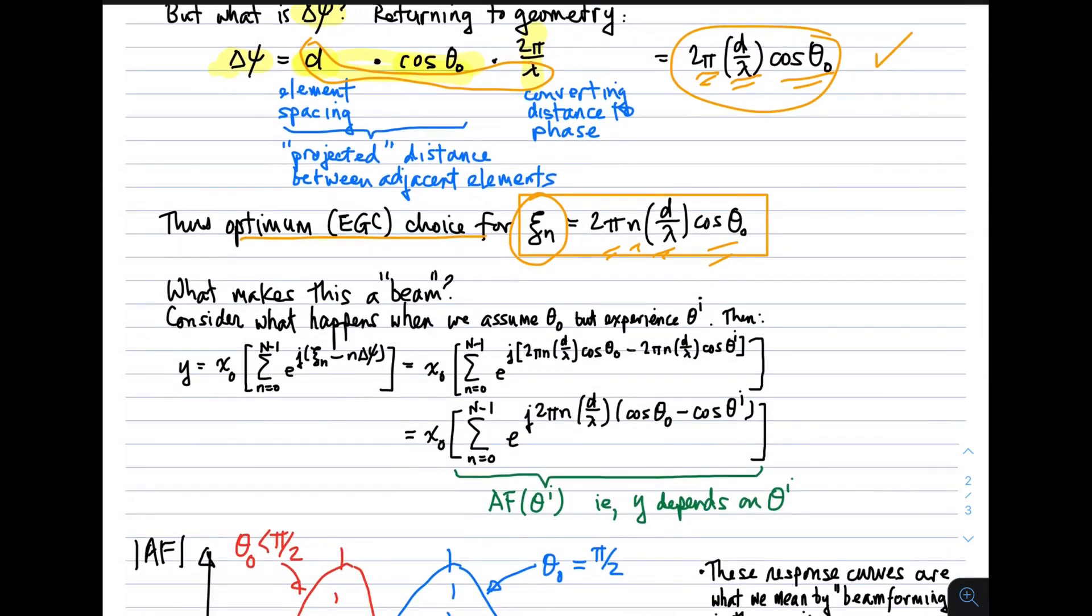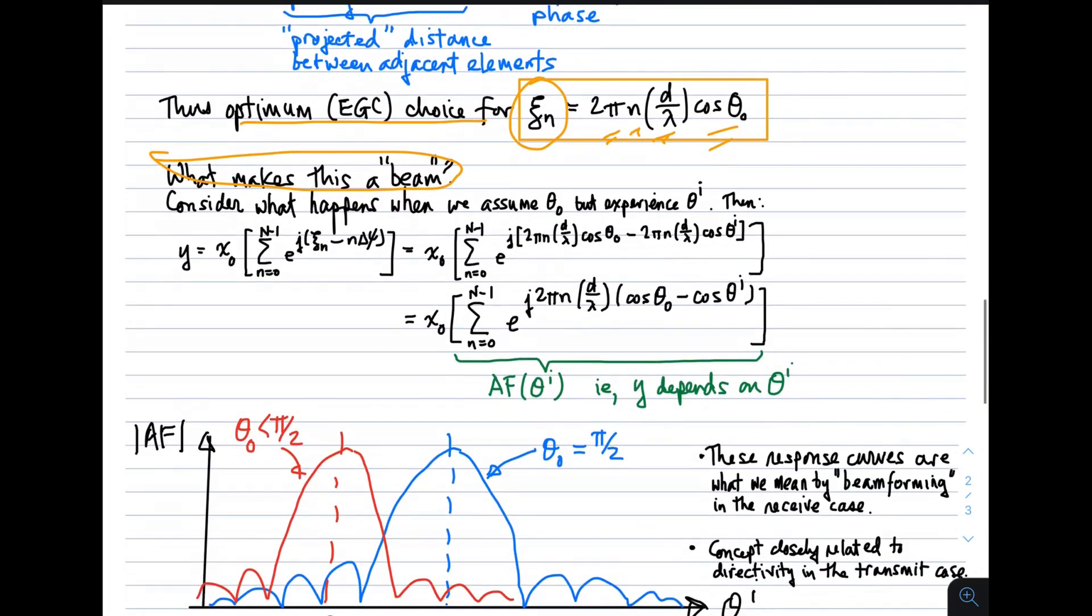So you might ask the question, what makes this a beam? I mean, when we're transmitting, it's pretty obvious what a beam is. We can measure power density in different directions and say that the beam points in a direction where the power density is greatest and is not pointing in directions where the power density is less. But here we're receiving. So what does it mean to have a beam on receive? Well, the answer to that question really pivots on the following question, which is to consider what happens when we assume that the beam is arriving from a particular direction and design the phase shifts that way. But in fact, the wave comes from a different direction, which is theta sub i. So to say that another way, let's imagine we set up the beamformer for a particular direction, theta naught, but the plane wave actually arrives from a different direction, theta super i. No problem, we can figure out what the response is going to be in that case.